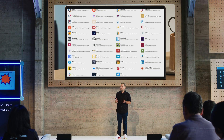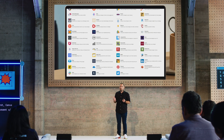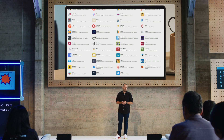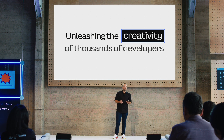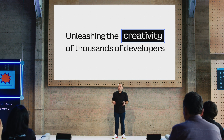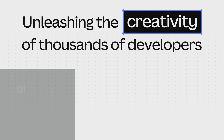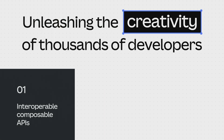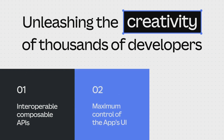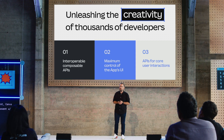Listening to our developers through interviews and support channels, we realized that this approach did not offer enough flexibility. So we had the opportunity to push ourselves a lot harder to find a way to unleash the creativity of thousands of developers. To do this, we needed to open up our platform to give access to flexible and powerful APIs that can be composed into rich apps. APIs should be interoperable too, so that they can be mixed and matched within a single app, and we should enable developers to have maximum control of the apps' interface.